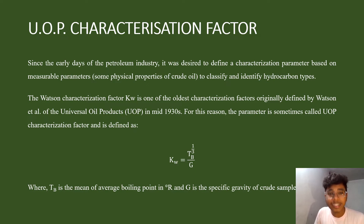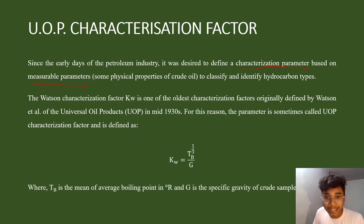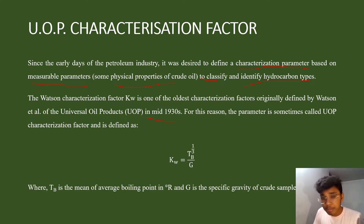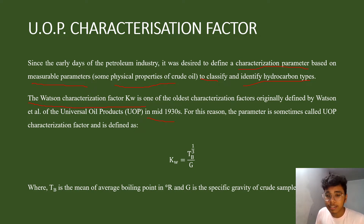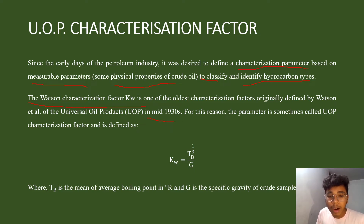The Universal Oil Product characterization factor. From the very beginning of the petroleum industry, it was desired to define a characterization parameter based on measurable physical properties of the crude, like density and viscosity, to classify and identify hydrocarbon types. In the mid-1930s, a scientist named Watson, along with his colleagues, developed the Watson characterization factor — one of the oldest characterization factors — originally defined by Watson and his colleagues of the Universal Oil Products. The equation states: KW = Tb^(1/3) / G, where Tb is the mean average boiling point in degrees Rankine and G is the specific gravity of the crude sample at 60°F.